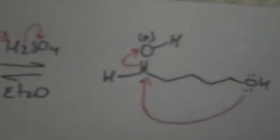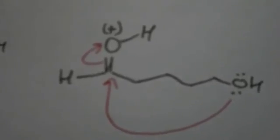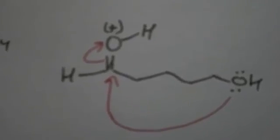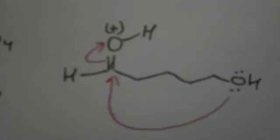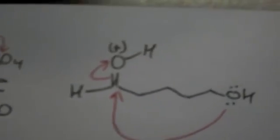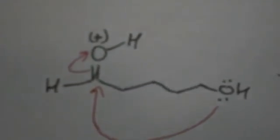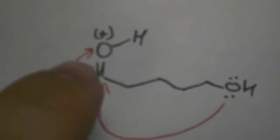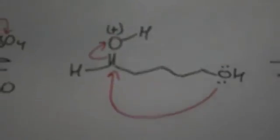What we get is the oxygen attacks and it deprotonates the hydrogen from the sulfuric acid. Then the oxygen from the alcohol attacks the carbonyl carbon to neutralize the oxygen on the carbonyl to get this compound which makes a ring.